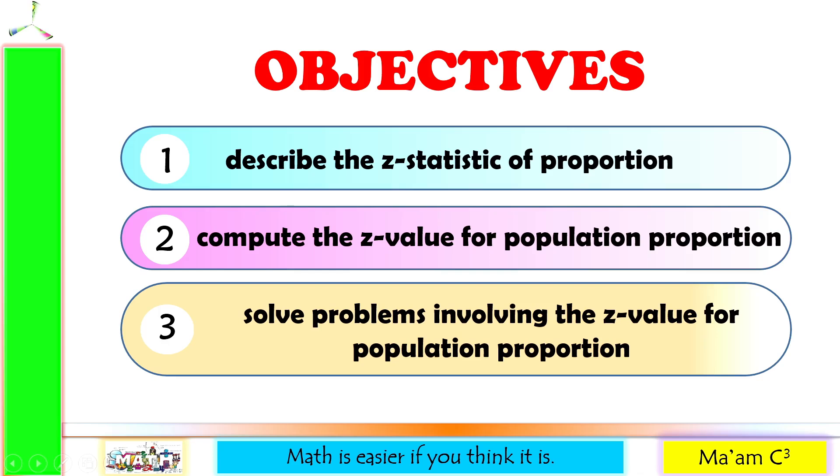Our objectives in this lesson are the following: describe the Z-statistic of proportion, compute the Z-value for population proportion, and solve problems involving the Z-value for population proportion.